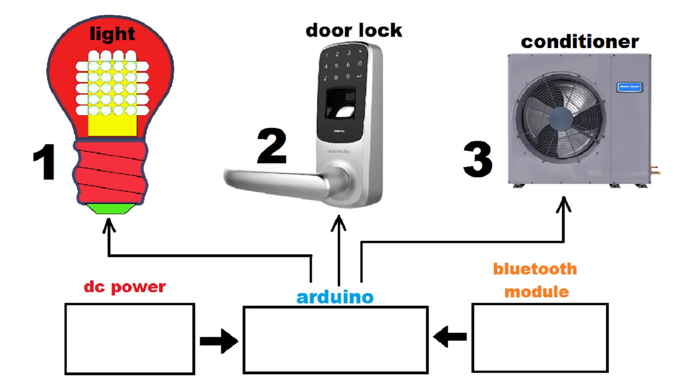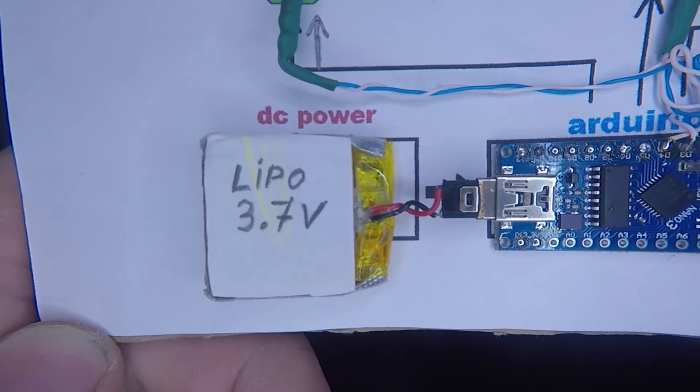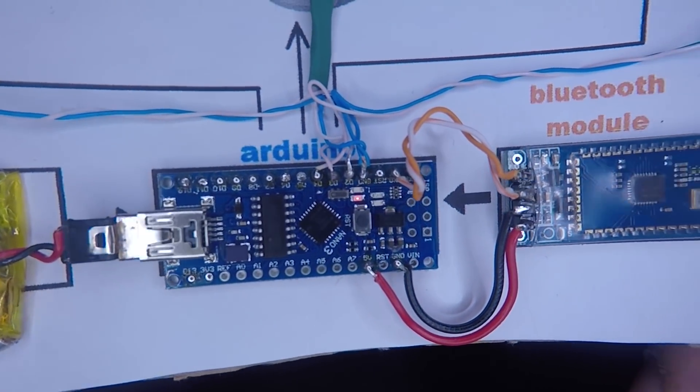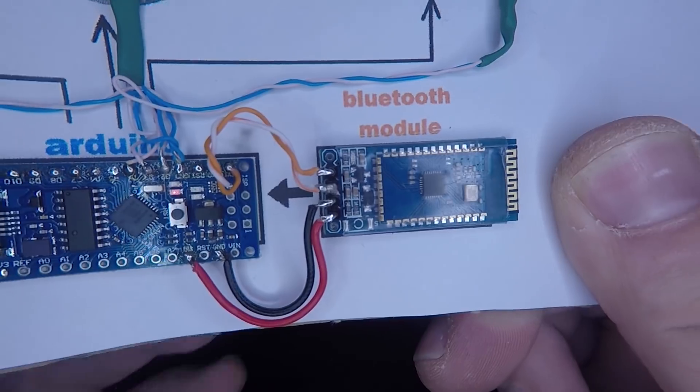Next step is to understand the circuit diagram. Basically, the LiPo battery powers up the Arduino Nano and also powers up the Bluetooth module. The Bluetooth module is for interaction with the Android device.